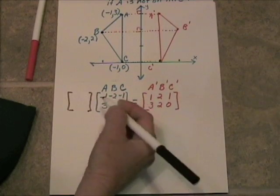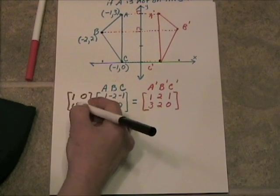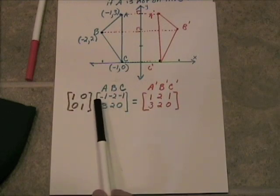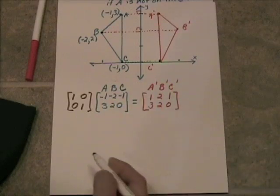Turns out that if I were to multiply by the identity matrix, everything about this would be the same.